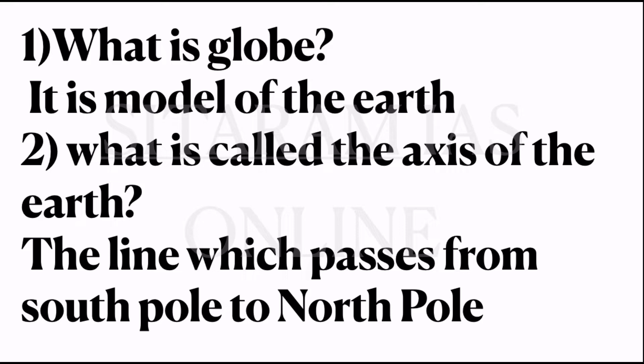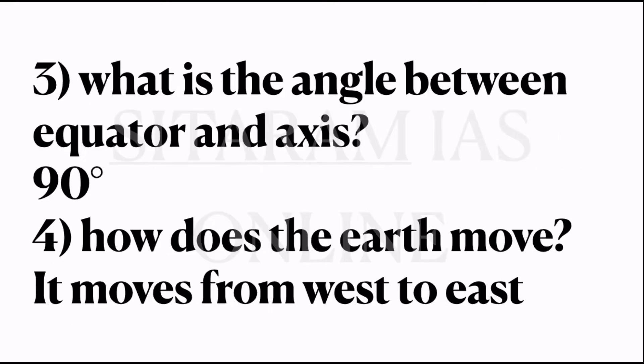Second question: what is called the axis of the earth? The axis of the earth is the line which passes from the south pole to the north pole. It is called the axis of the earth. And third: what is the angle between the equator and axis? It is 90 degrees.